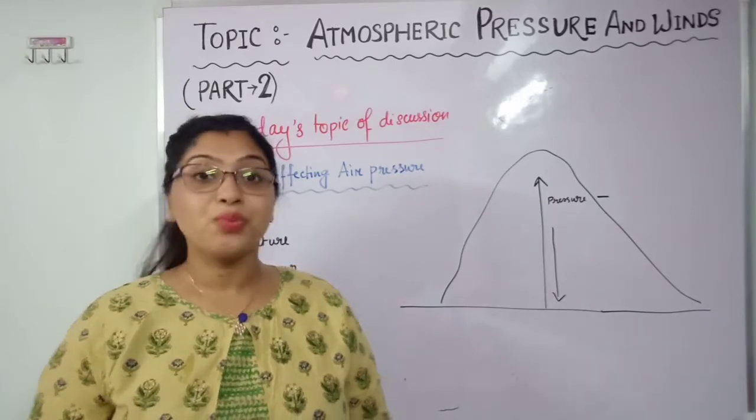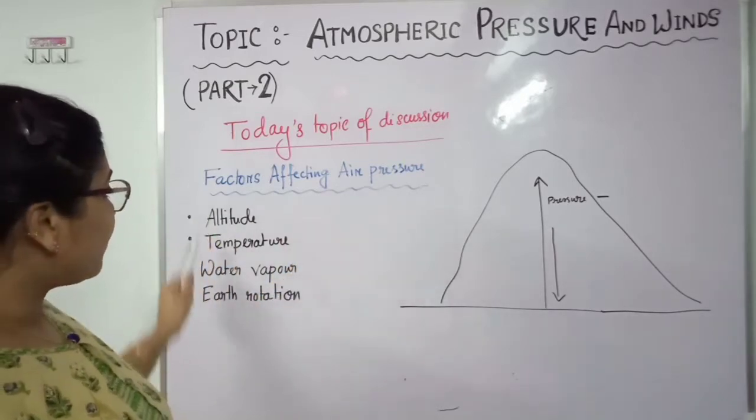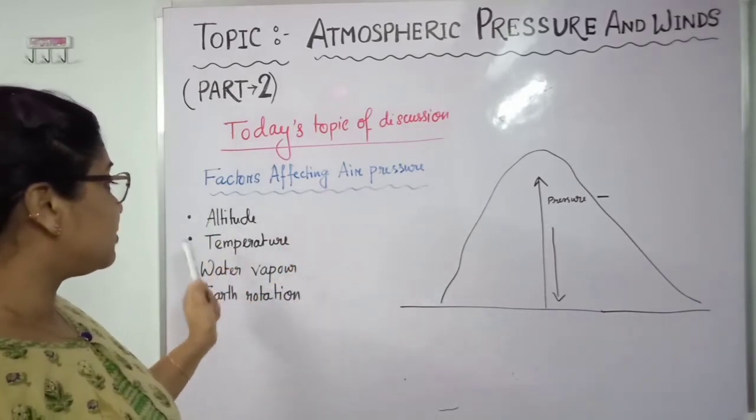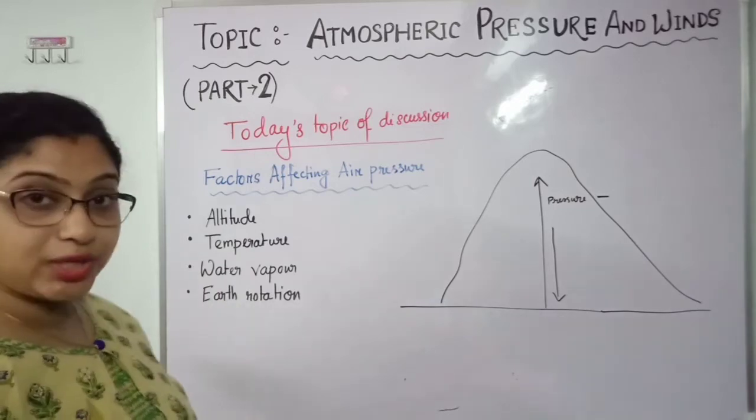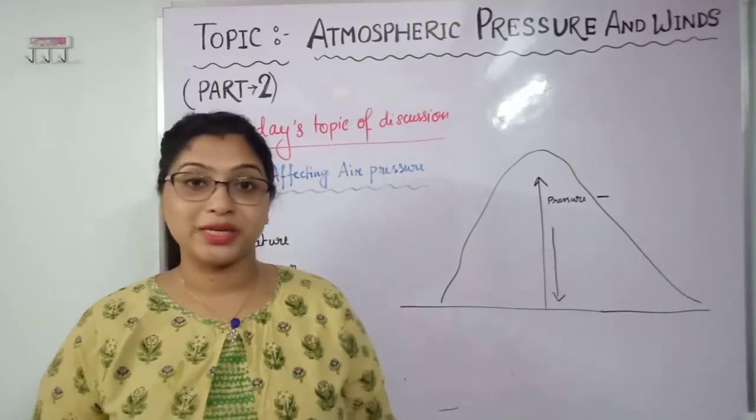In this chapter, what we will learn here - factors affecting air pressure. So here, four factors I have written: altitude, temperature, water vapor, and earth rotation. Please see the first part of the video for better understanding.